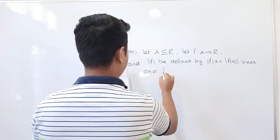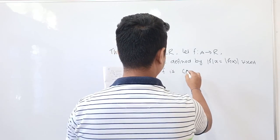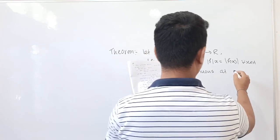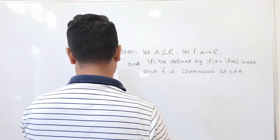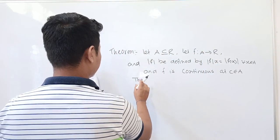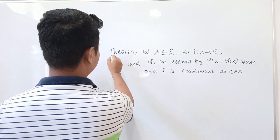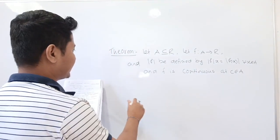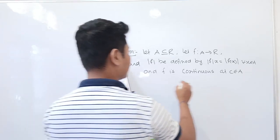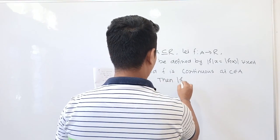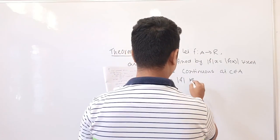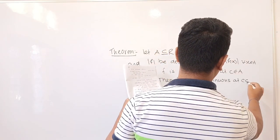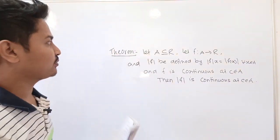If f is continuous at c belonging to A, then prove that mod of f is also continuous at c belonging to A. That is the statement of the theorem.